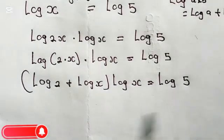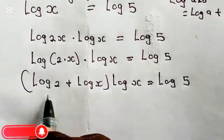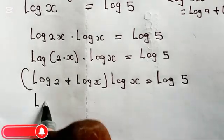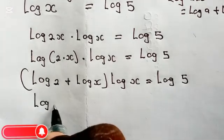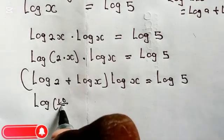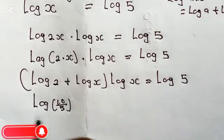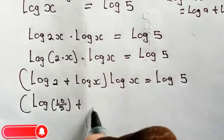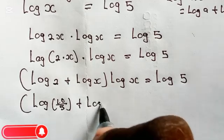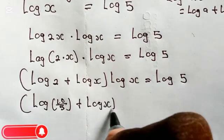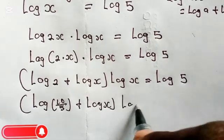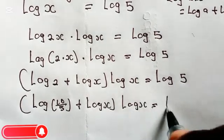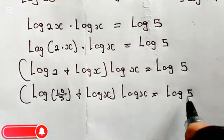Now don't forget log 2 — we can write it as log(10/5), since 10 divided by 5 is 2. So we have log(10/5) plus log x, multiplied by log x, equals log 5.